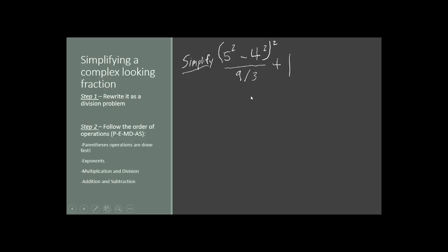The fraction we've given you is a large one: we have 5 squared minus 4 squared, in parentheses, squared, divided by 9 over 3, plus 1. If you run into something this complicated-looking and it has a division bar in the middle, it's a good idea to rewrite the division bar as a regular division sign — that can help clear up the confusion almost immediately. Let's try it.